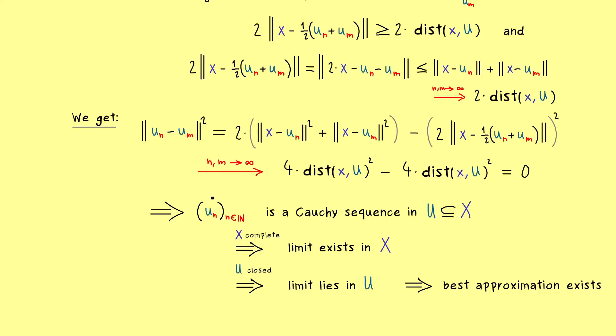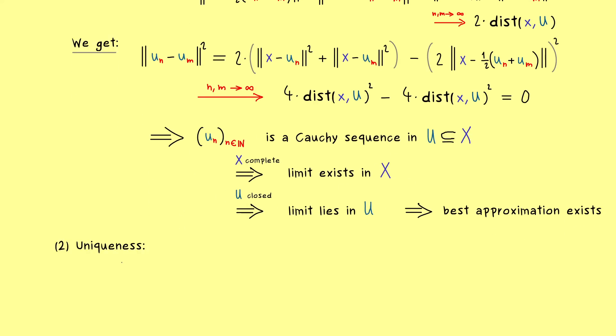So the last part of the proof is now the uniqueness. And maybe surprisingly, this one is not so hard anymore, because we have already done all the work before. And as often for a uniqueness proof, we just have to assume that we have 2 elements given. So maybe let's call the 2 best approximations here U tilde and U hat. So both are elements in U and they also satisfy our best approximation formula. Which simply means that the distance x to U is given as the norm of x minus U tilde. And in the same way, now also for x minus U hat.